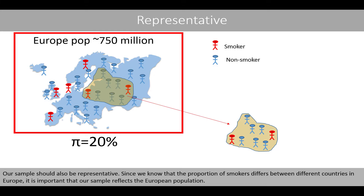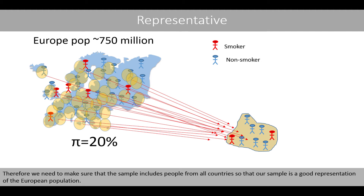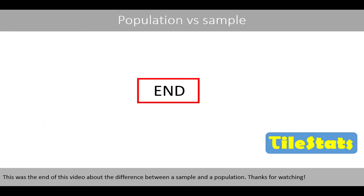Our sample should also be representative. Since we know that the proportion of smokers differs between different countries in Europe, it is important that our sample reflects the European population. If we would collect random people only from half of the countries in Europe, then our sample would not represent the whole population. Therefore, we need to make sure that the sample includes people from all countries so that our sample is a good representation of the European population. This was the end of this video about the difference between a sample and a population. Thanks for watching.